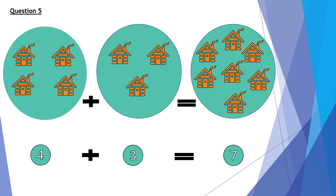Question 5. 4 houses plus 3 houses equals 7 houses. So in the number form, 4 plus 3 equals 7.